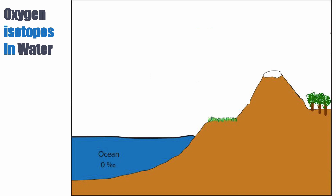In this diagram here, what you can see is a representation of a continent and the ocean — it's absolutely not to scale. The ocean has a value of zero per mil. This is all expressed in SMOW, even though it's not explicitly written. The values here are in SMOW.